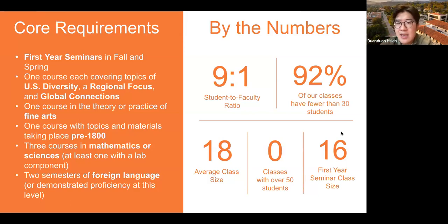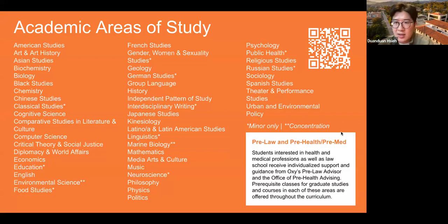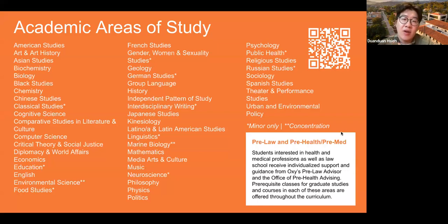We have a nine-to-one student-to-faculty ratio. All of our classes are capped at 50, and 92% of our classes have fewer than 30 students — really small class sizes where you get to engage and know your peers. Our top major right now is economics, and our top five also include computer science, psychology, biology, English, and diplomacy and world affairs, which is our international relations major. Not majors you'd typically associate with a small liberal arts college — we have a wide range of academic areas.